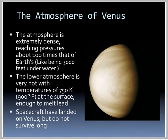Some sunlight penetrates to the surface and appears tinted orange due to the clouds absorbing all the blue wavelengths. The atmosphere is extremely dense, reaching pressures about 100 times that of Earth's — like being under 3,000 feet of water for a similar pressure. The lower atmosphere is very hot, with temperatures up to 900 degrees Fahrenheit — enough to melt lead. Spacecraft have landed on Venus but do not survive long because of the harsh conditions.